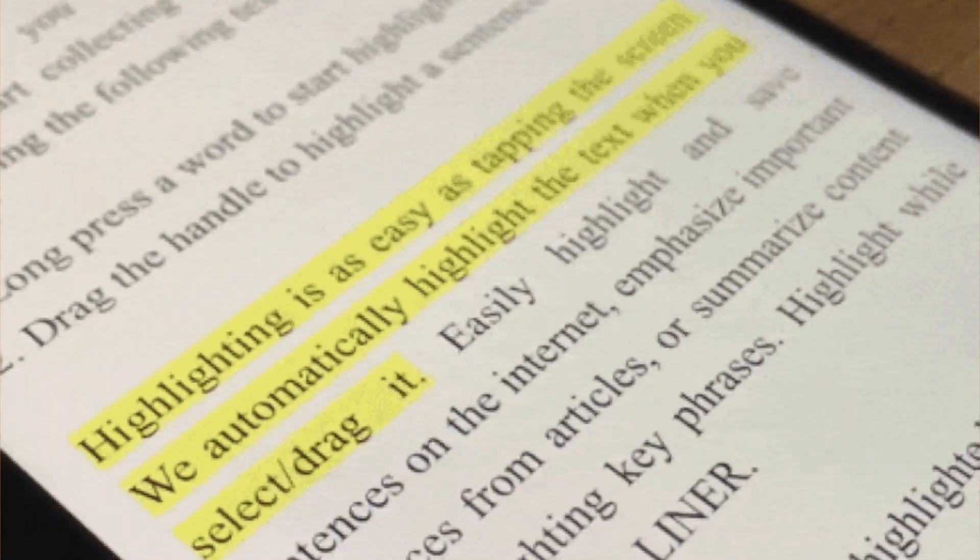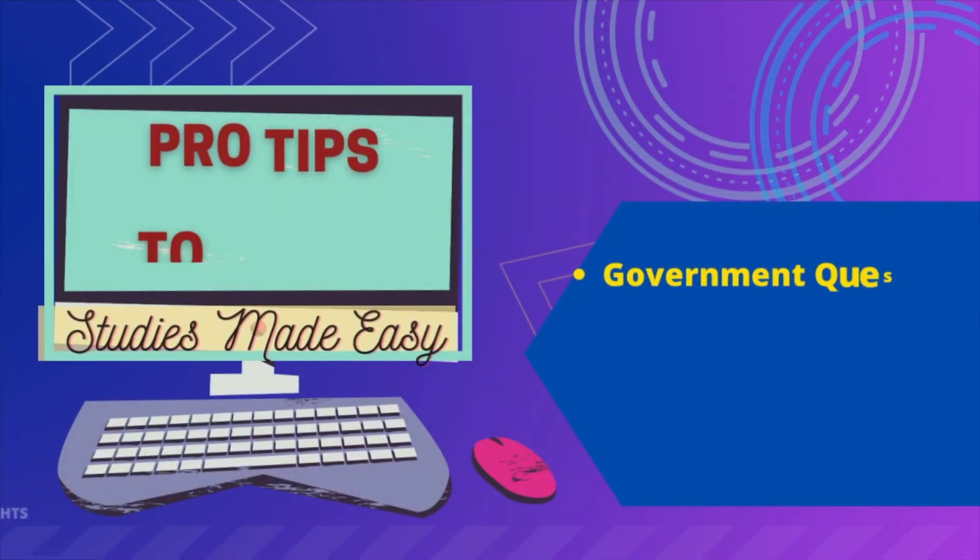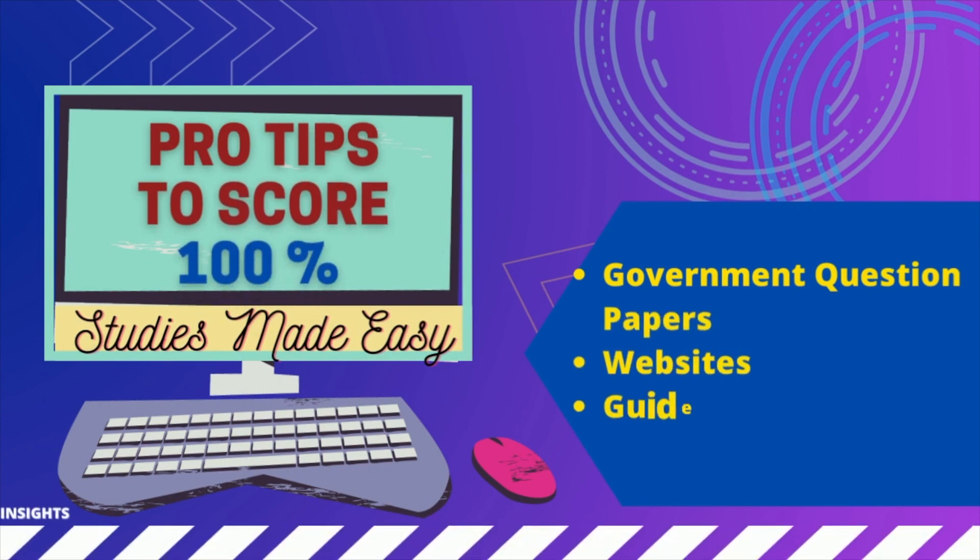Book back objectives are definitely important, but if you are aiming for full marks, that is not enough. When reading the lesson, highlight or underline important words that could come as objective questions. The best additional source for objectives is government question papers — go through the objectives that appear in those papers. There are many websites and guides you can use. With this approach, scoring 15 out of 15 in objectives is easy to achieve.